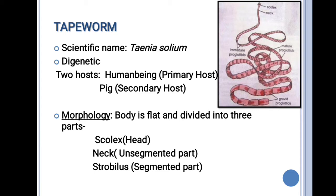Now let us know about the morphology — how it looks. The body is flat and it is divided into three parts. The first part is the scolex, which is the head. Next is the neck, which is the unsegmented part. The third portion is the strobilus, which is the segmented part. You can see which one is the scolex, neck, and strobilus in the picture.